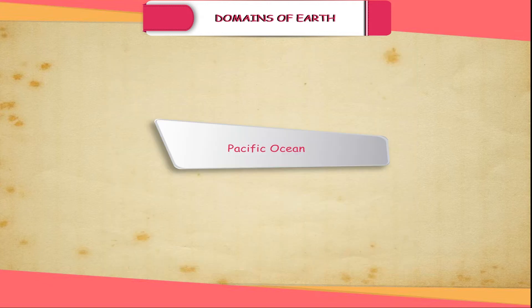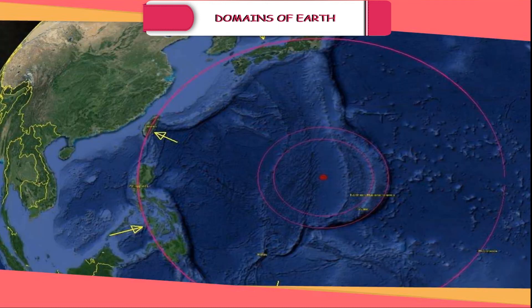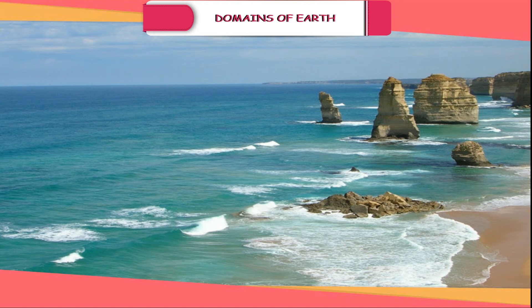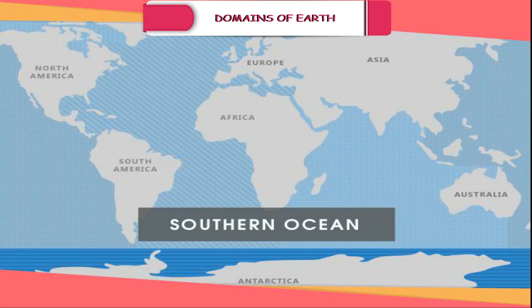Pacific Ocean. It is larger in area than all the other oceans put together. Mariana Trench, the deepest part of the Earth, lies under the Pacific Ocean. It is circular in shape, and Asia, Australia, North and South America surround it.